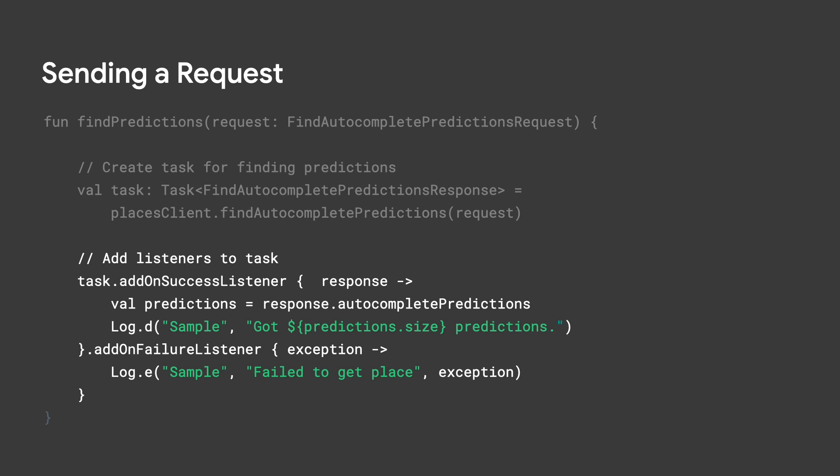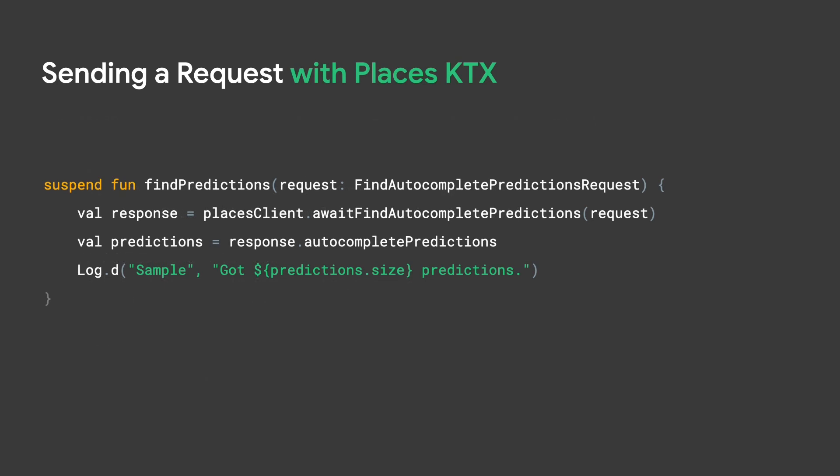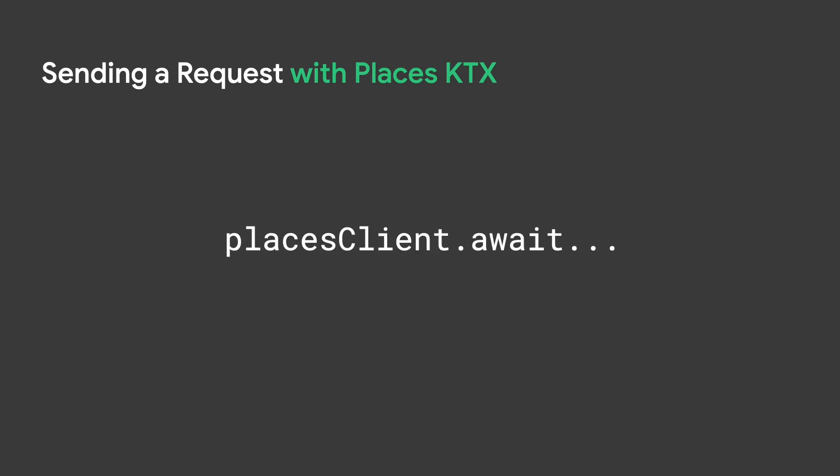As an alternative to this API, the Places KTX library provides an extension so that you can use coroutines to later receive the response. Rewriting the same example, you can call await Find Autocomplete Predictions instead and call this within a suspending function or a coroutine context to receive the response. Doing so enables you to write code in a serial manner, which really improves readability. To discover other methods you can use with coroutines, find methods within Places client that are prefixed with await.